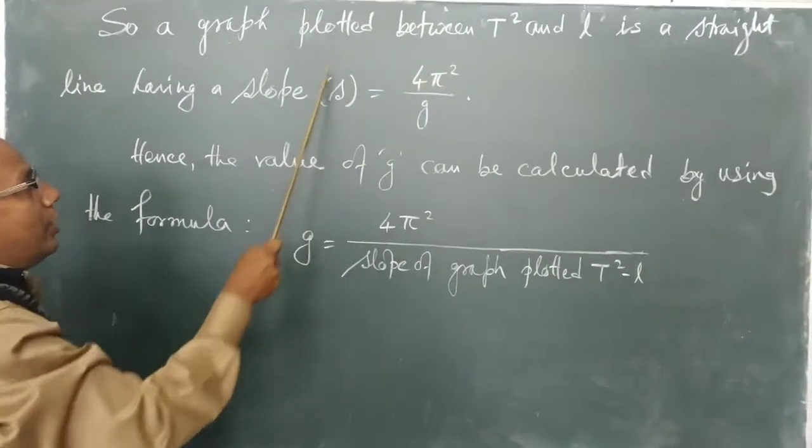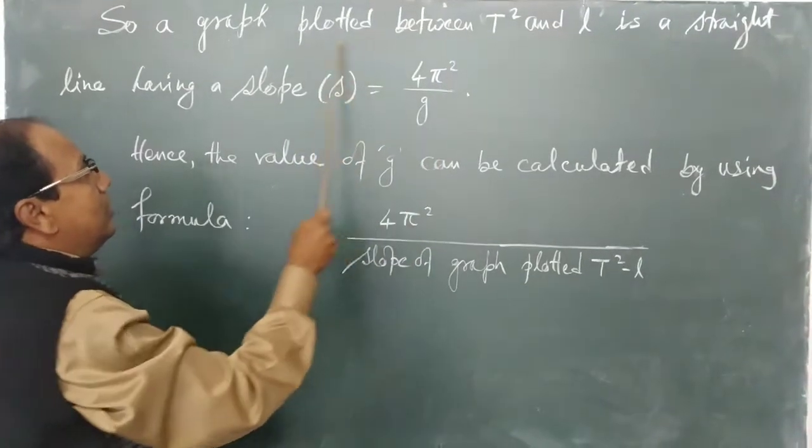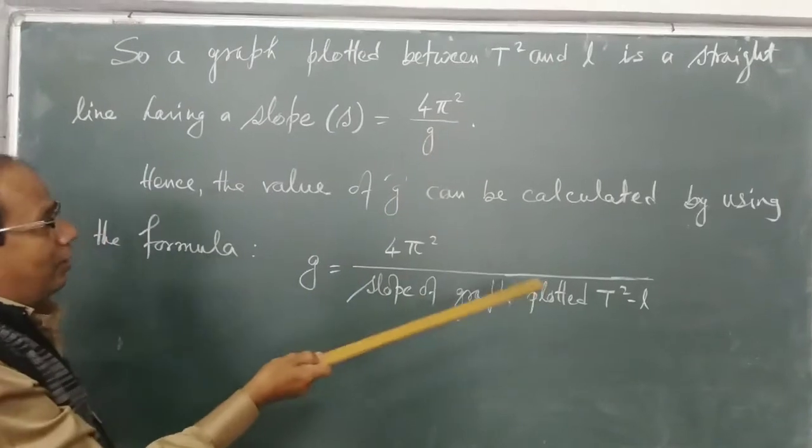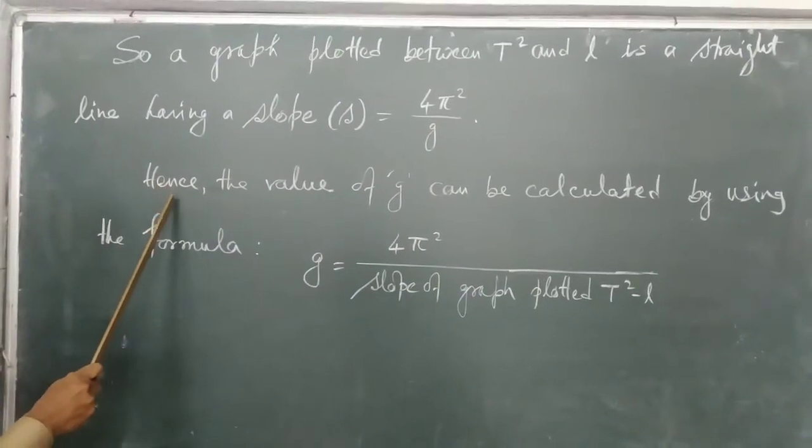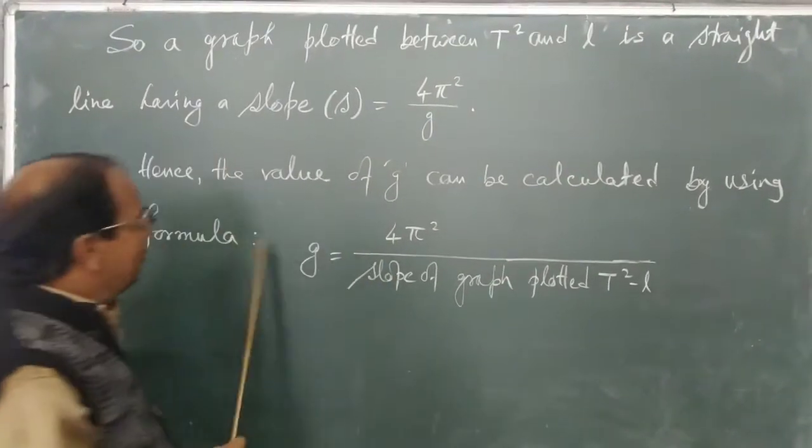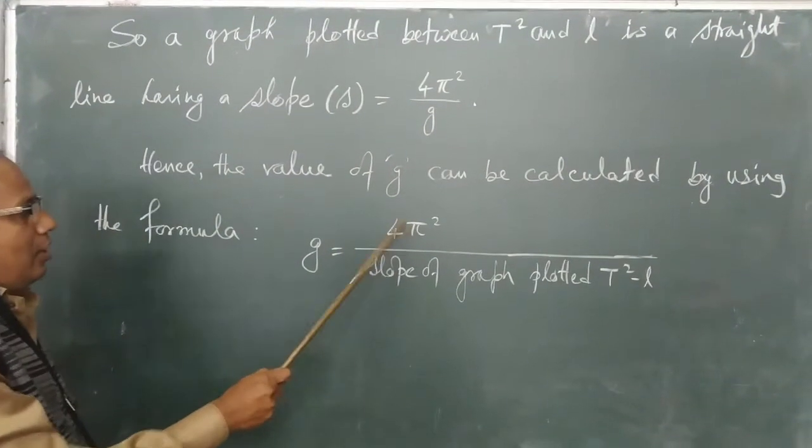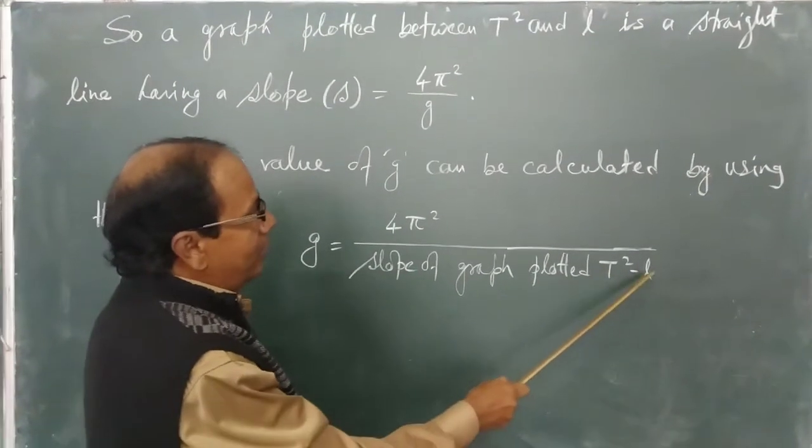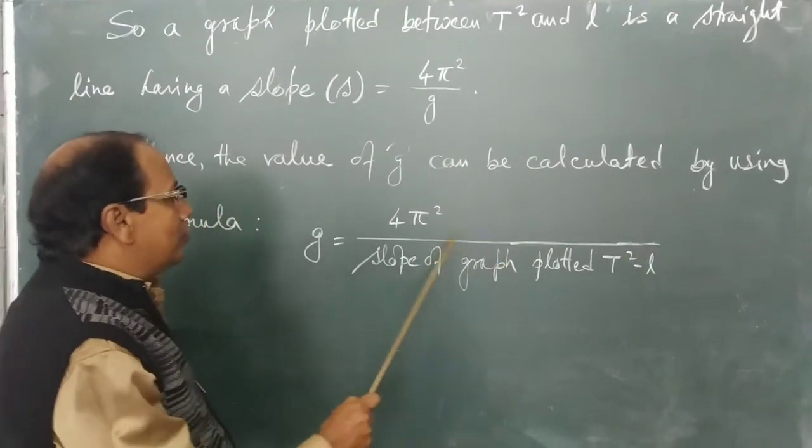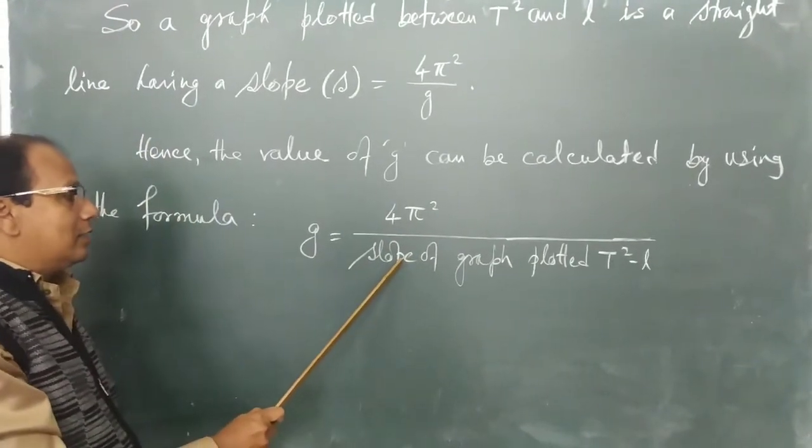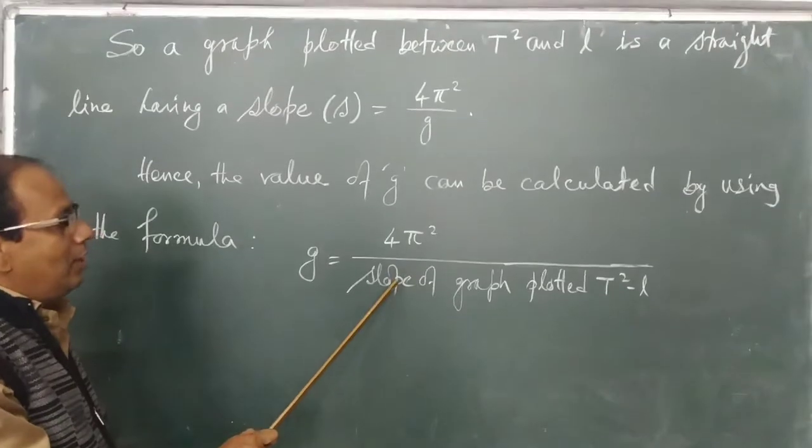This portion we will see how to calculate from the graph after plotting the graph later on. So from here we can easily get the value of g by using the formula 4π² upon slope of graph plotted T² vs L. Only we need to know the slope of the graph which I will discuss or determine later on.